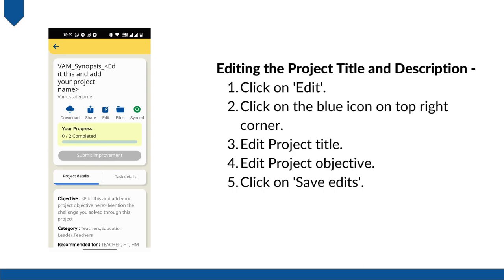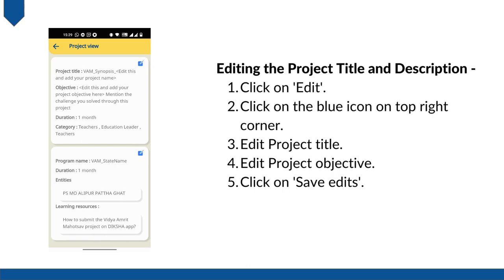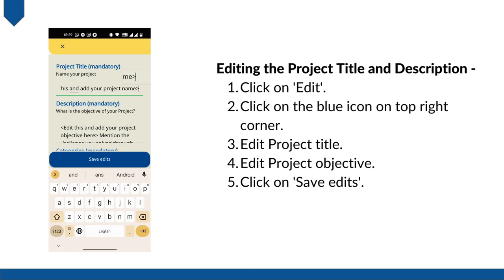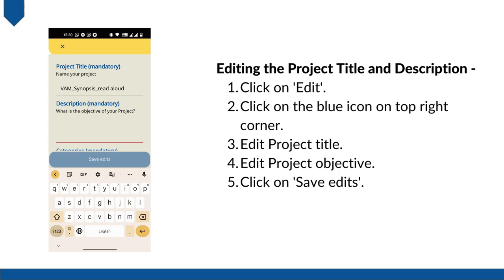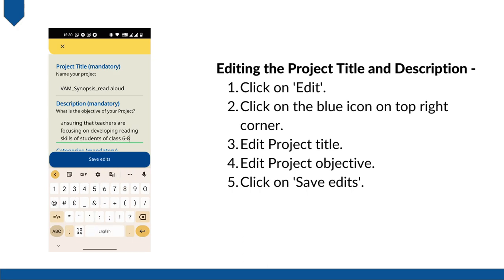For doing the Vidya Amrit Mahotsav project, you are required to edit the project title and objective. Click on the edit icon below the project title and then click on the blue icon at the top right corner to edit the title and objective. Edit the instruction part and add the title of the innovation project you want to document. For example, if your innovation project is a read aloud activity, then your project title will look like 'VAM underscore synopsis underscore read aloud.' Here you are required to edit the text and add the challenge you solved through this innovation project. Click on 'Save edits' to save the changes you made to the project title and objective.